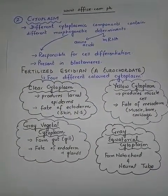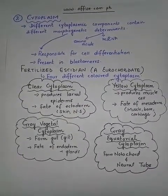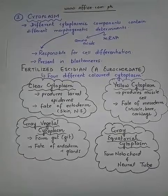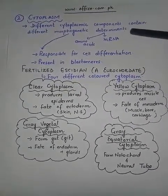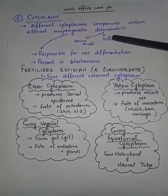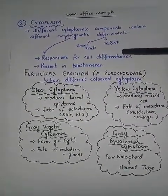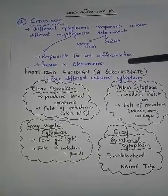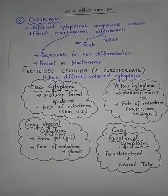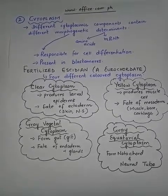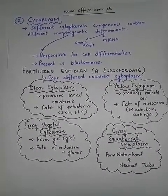This happens for almost all the organs that are formed and all types of pigments produced in the skin. These morphogenetic determinants — both messenger RNA and amino acids — are responsible for controlling the differentiation of different cells depending upon the functions they are going to perform in the future.